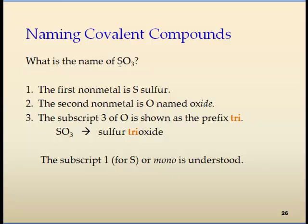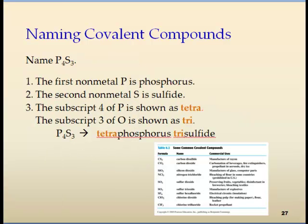Up here we have sulfur and three oxygen, so the first element is sulfur. Sulfur trioxide. Isn't it a lot simpler? There are phosphorus and sulfur, but there are four of these. The prefix for four is tetra, so this would be tetraphosphorus trisulfide.